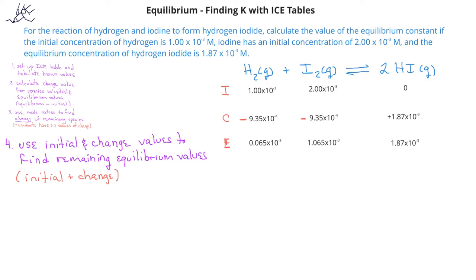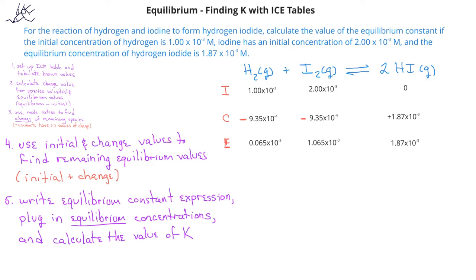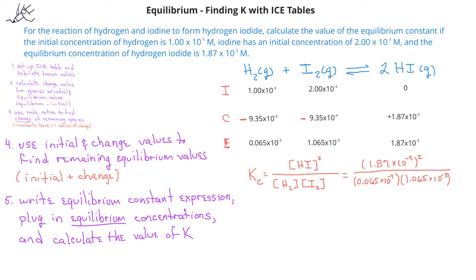Now that we have all three equilibrium values, we can write the equilibrium constant expression, plug in the equilibrium concentrations, and determine the value of K. The equilibrium constant expression is the concentration of hydrogen iodide squared, divided by the concentration of hydrogen multiplied by the concentration of iodine. Plugging in the values: (1.87 × 10⁻³)² divided by (0.065 × 10⁻³) times (1.065 × 10⁻³). When we calculate that, we get a value of 51, rounded to two significant figures.